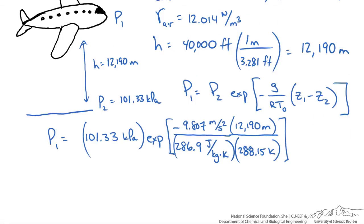Here we are using 9.807 meters per second squared as our gravitational constant. Also the gas constant, I am using 286.9 joules per kilogram kelvin. And looking up the temperature at sea level found 288.15 kelvin. You will find that everything inside the exponential ends up being unitless. So we get a pressure P1 that is equal to 23.9 kPa.